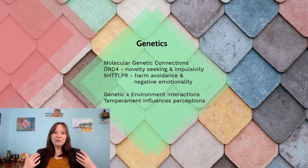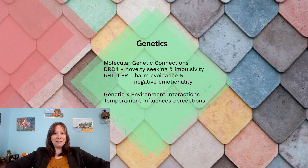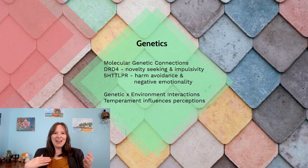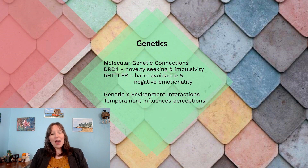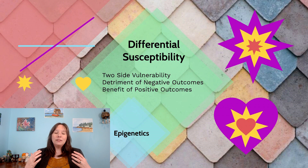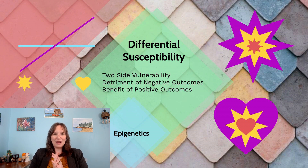Genetics do not just influence how you interact with your environment, but also how you perceive your environment. Two individuals will perceive the same context, activity, or event in a very different way — there's no objective reality, it's all perceptive. A person high in sociability versus low in sociability will view a social environment as more or less threatening; a person who is more or less emotional will remember an event very differently. How temperament plays a role in our context leads into Belsky's theory of differential susceptibility — the idea that we are not just vulnerable to negative risks of our context, but also more susceptible to the positive outcomes of our environment.